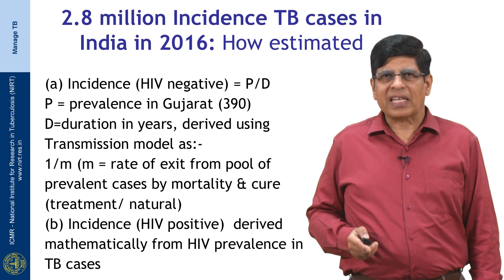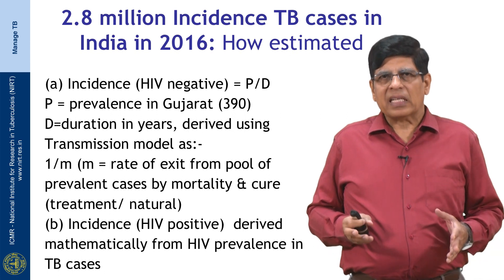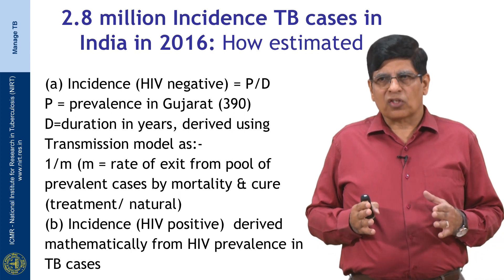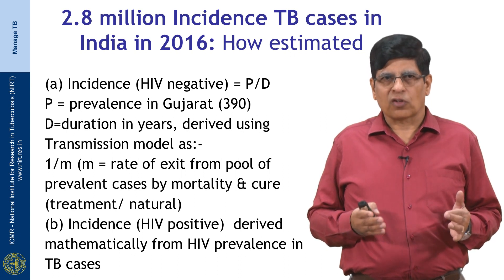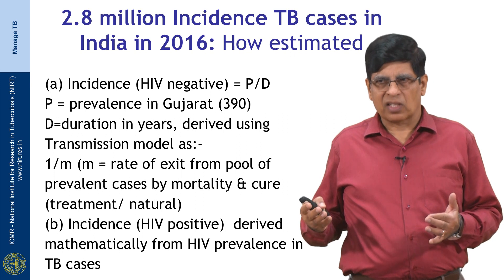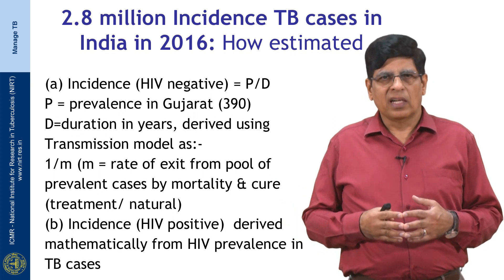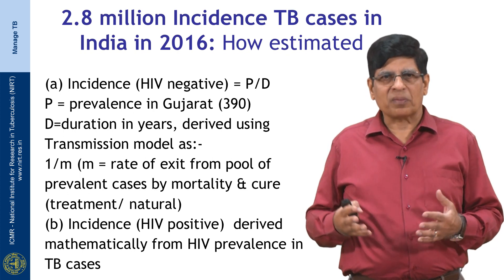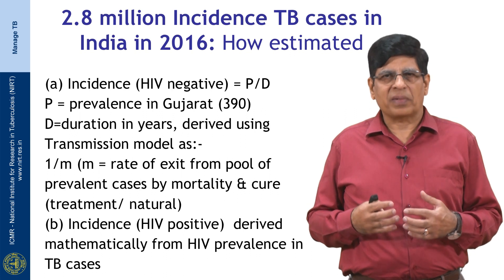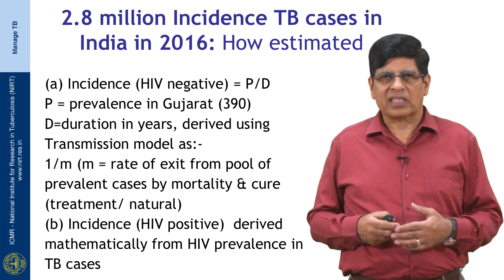How did we estimate this incidence at 2.8 million in India? Estimation of burden is a complex process. Several groups of individuals work on generating data on different disease aspects, while another group uses transmission modeling and epidemiological modeling to find missing data and arrive at best estimates of TB disease burden in terms of incidence, prevalence, and mortality.